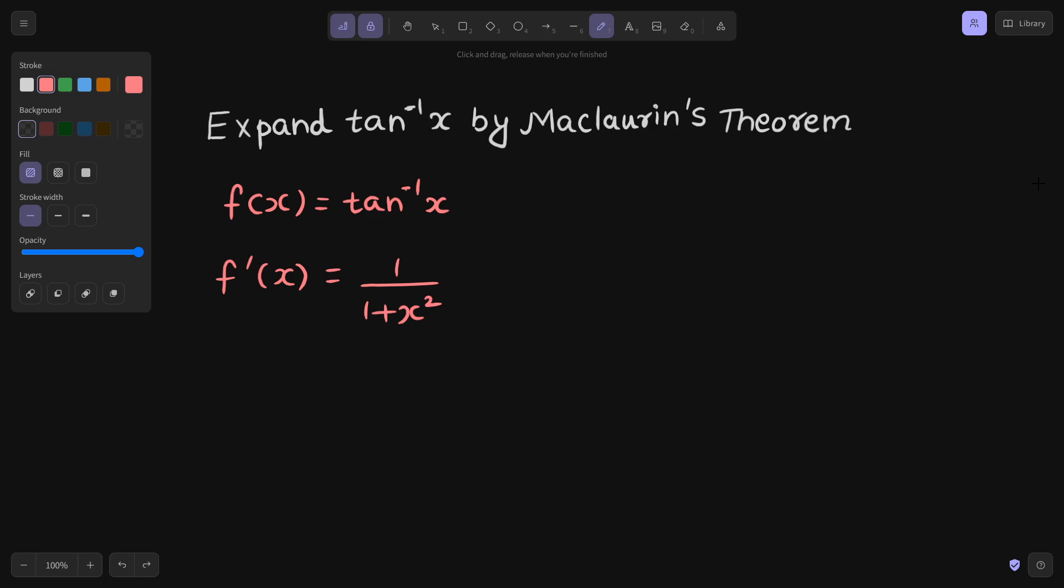Now using quotient rule is something we try to avoid most of the time because it is a bit lengthier. Instead we always prefer power rule because that is simpler. So let's write it as (1 + x²)^(-1). But this is something very interesting because if you have some idea of binomial, then we know that (1 + x)^(-1) is 1 - x + x² - x³ + x⁴ minus and so on.